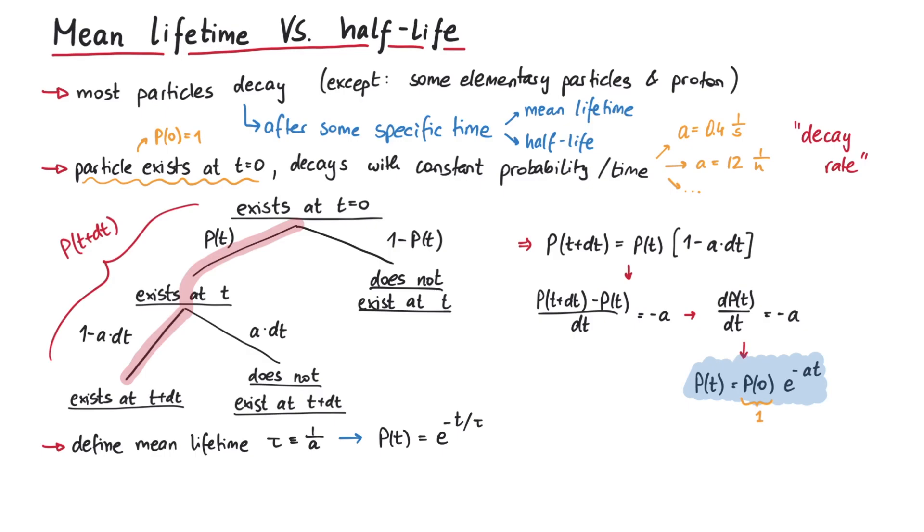But why is this quantity called mean lifetime? To see this, let us calculate the average time that this particle exists. This means we integrate over the quantity that we want to investigate multiplied by the corresponding probability that it will decay at some point. This corresponds to the other path in our diagram, p of t times a dt. The result of this integral is precisely tau, so this is really the mean lifetime of the particle.